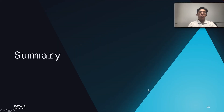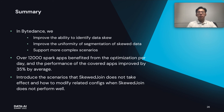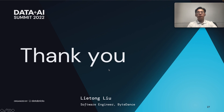Now let's summarize our talk. In ByteDance, we made some enhancements to Spark AQE skew join: we improved the ability to identify data skew, improved the uniformity of segmentation of skewed data, and added support for more complex scenarios. Over 12,000 Spark applications benefit from the optimization per day. 30% of them belong to scenarios we additionally support, and the performance of the covered applications improved by 35% on average. We have also shared user guidance about what situations AQE skew join cannot help, and what to do if AQE skew join does not perform well. Thank you.